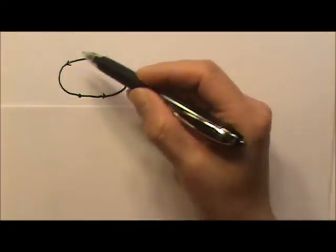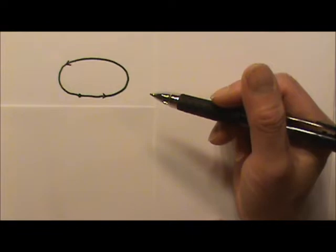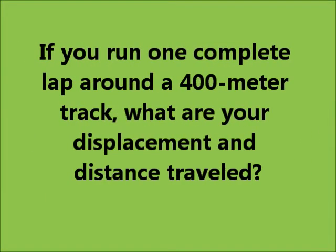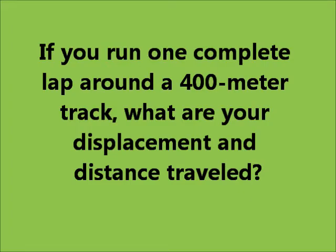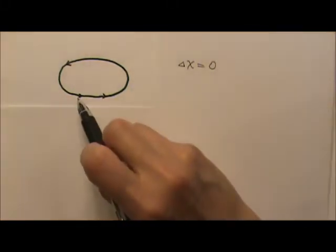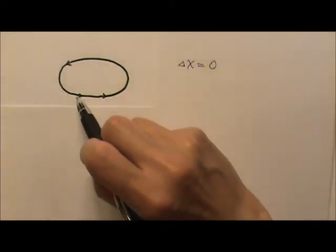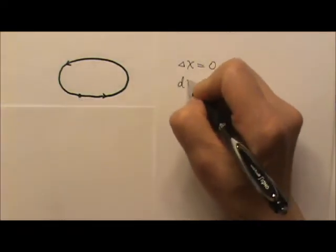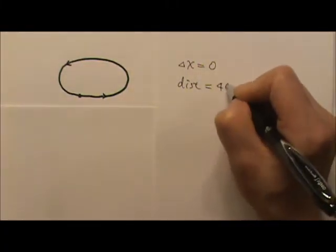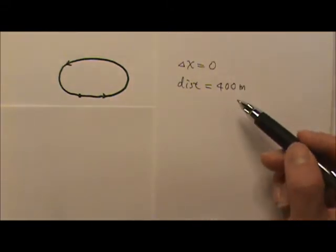For example, if you run one complete lap around a 400-meter track, what are your displacement and distance traveled? Your displacement would be zero because your starting position and the final position, they are the same. So the change in position is zero. But the distance traveled is 400 meters. In this case, the displacement and distance traveled have different numbers.